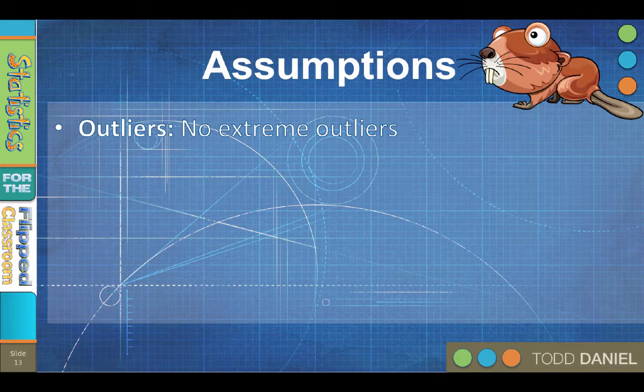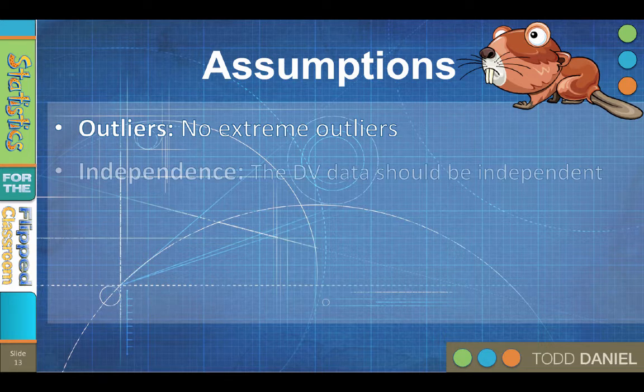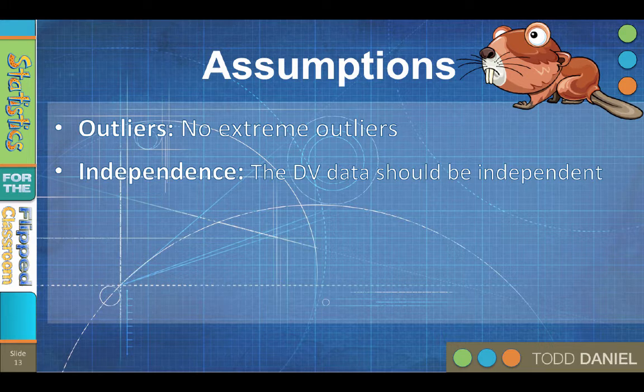The test assumes that you do not have extreme outliers. If you have outliers, you can fix that by removing them, or better yet, Windsorizing them to the next highest reasonable value.